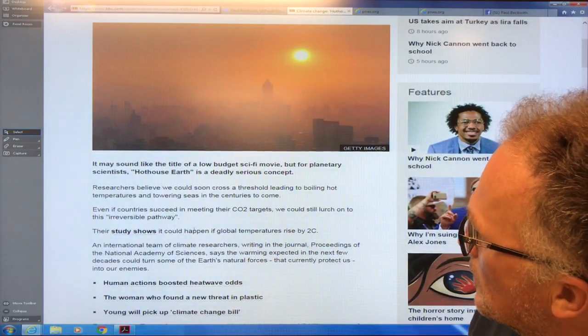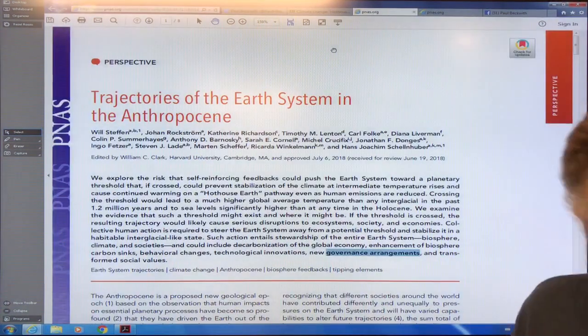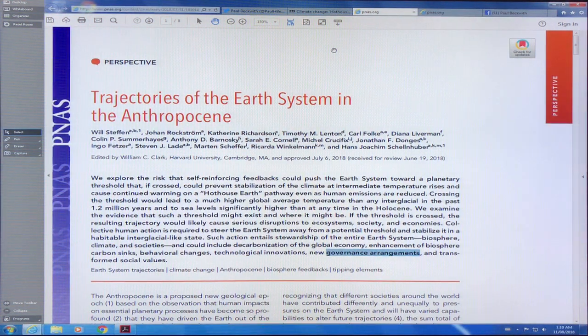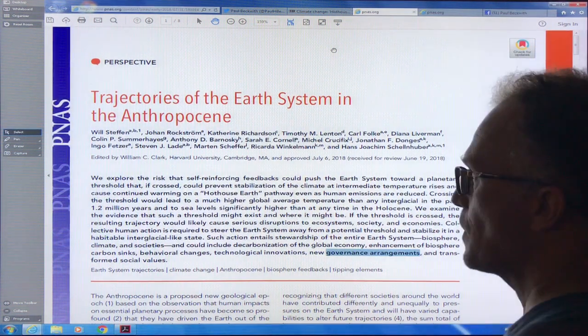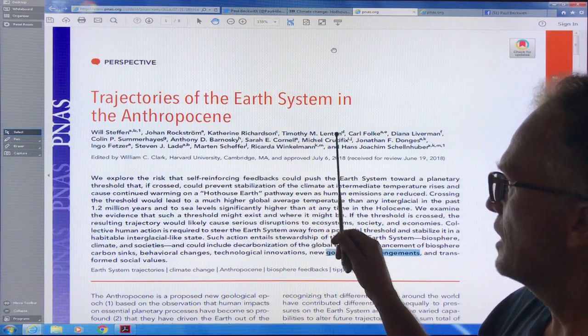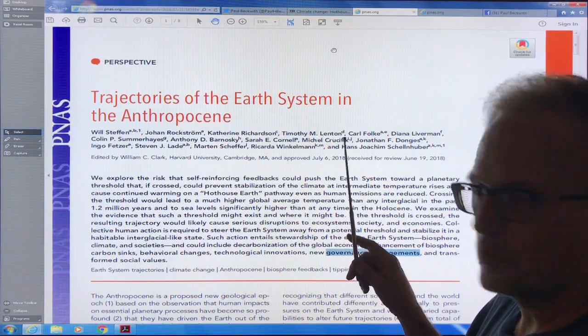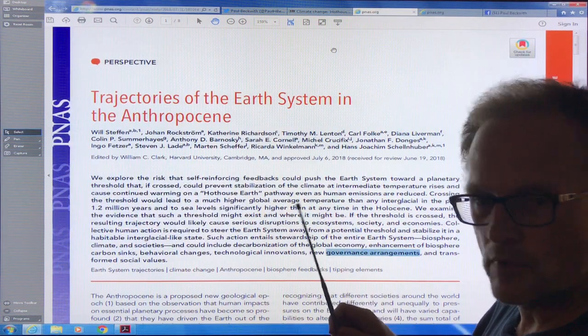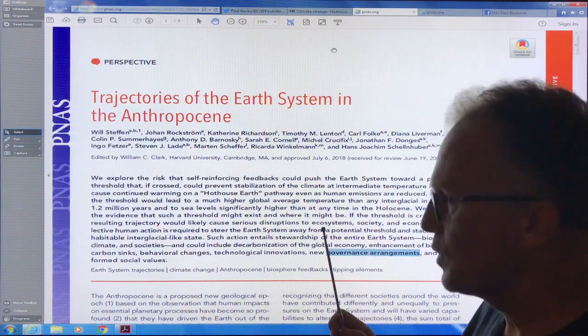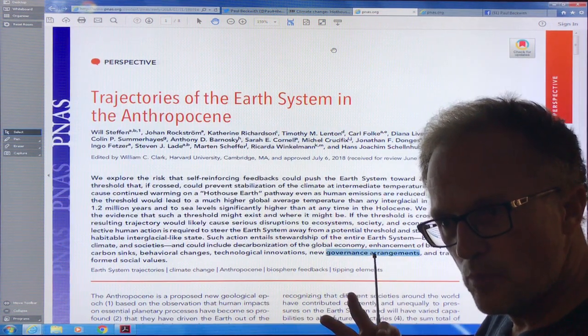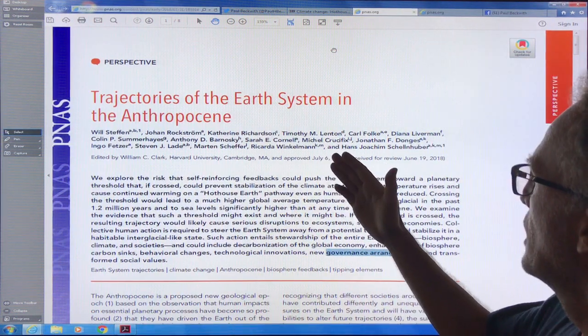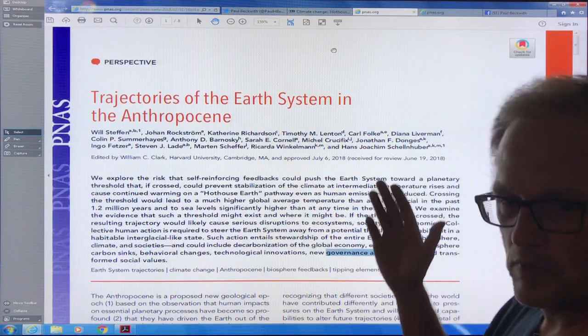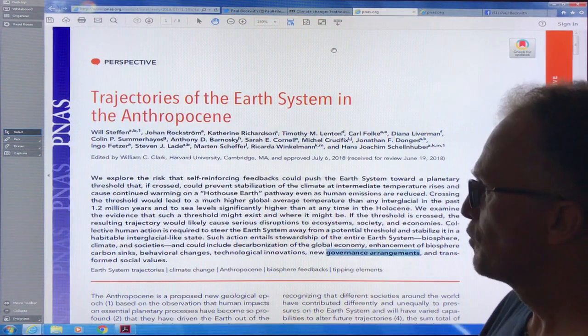So let's look at this study. It's called 'Trajectories of the Earth System in the Anthropocene.' A bunch of authors from Europe. Timothy Lenton wrote a paper, I believe it was in 2008, called 'Tipping Elements of the Climate System,' where he looked at all the different elements of the Earth system that could tip and lead to cascading feedbacks to cause very accelerated warming.